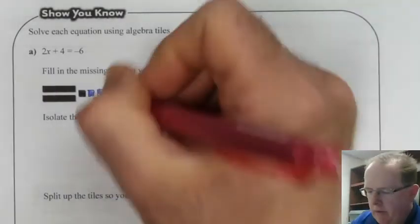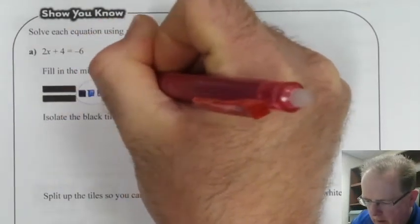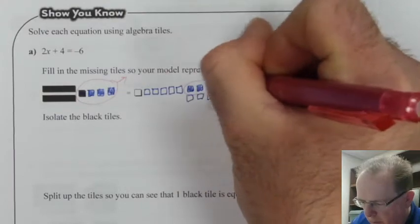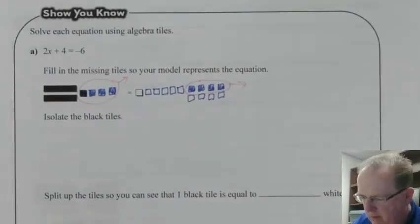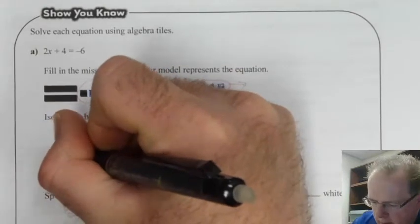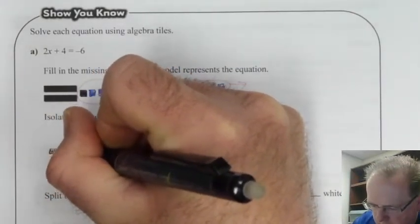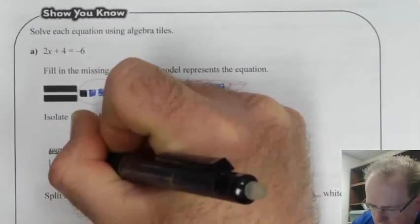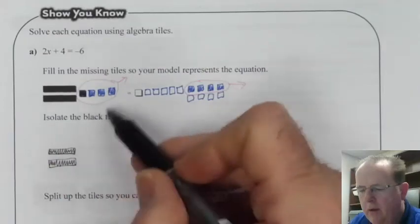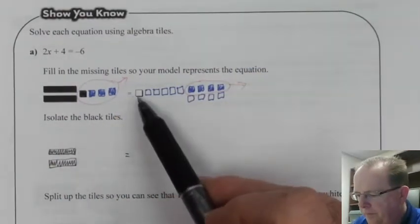Now, however, I can remove the 4 positive tiles from the left. And I can remove 4 positive tiles from the right. And now we've got a new scenario. We still have our 2 variables on the left. And there's nothing else on the left. That equals, what does it equal?